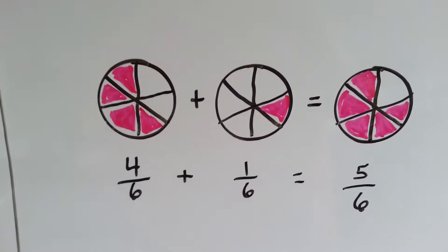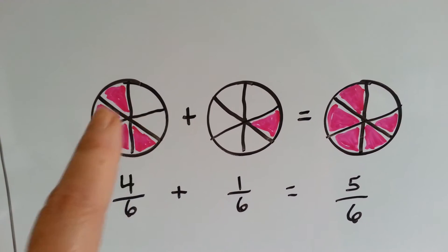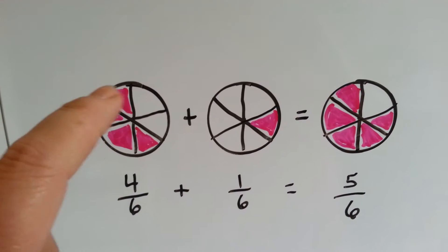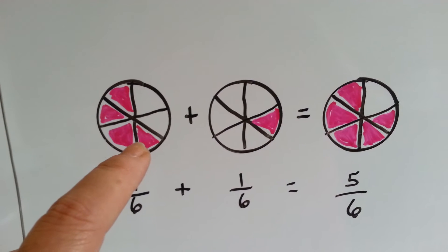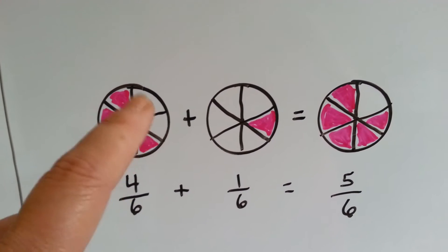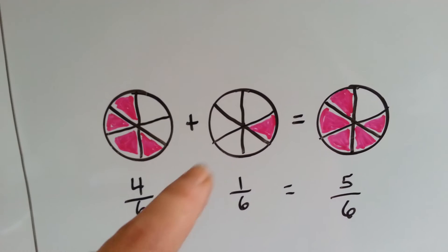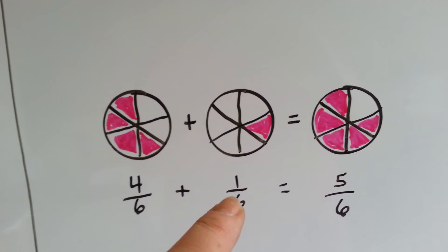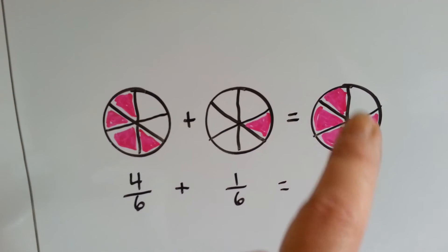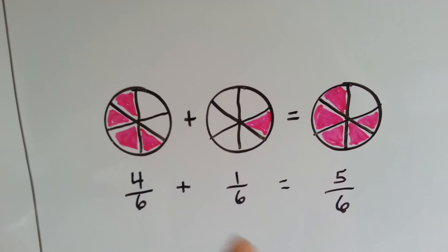Let's try it with this one. We've got circles, and 1, 2, 3, 4 are colored in, and 2 are not, so we have sixths. 4 sixths are colored in, and 1 sixth is colored in. And if we combined them, we'd have 5 sixths colored in.